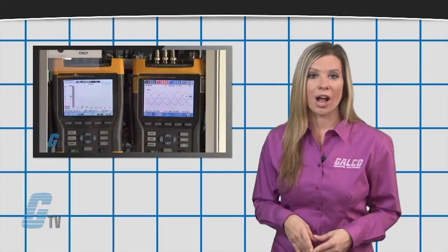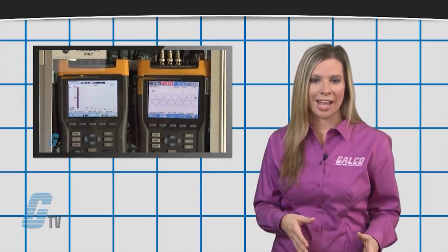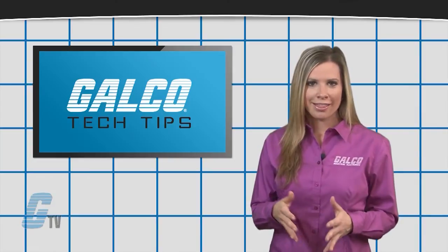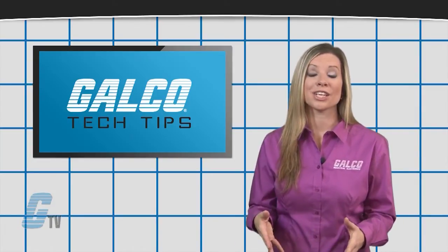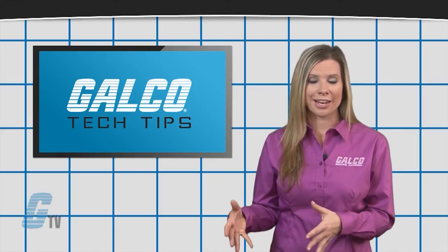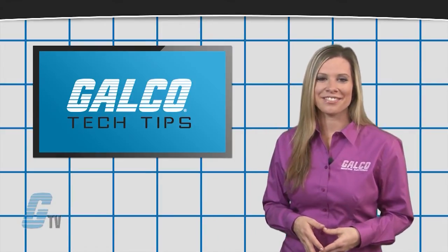A 12 or 18 pulse drive system can also help mitigate harmonics, and there are new low harmonic drives available that have integrated harmonic mitigation tools. To find out more about products for harmonic mitigation, check out our other videos on GTV.